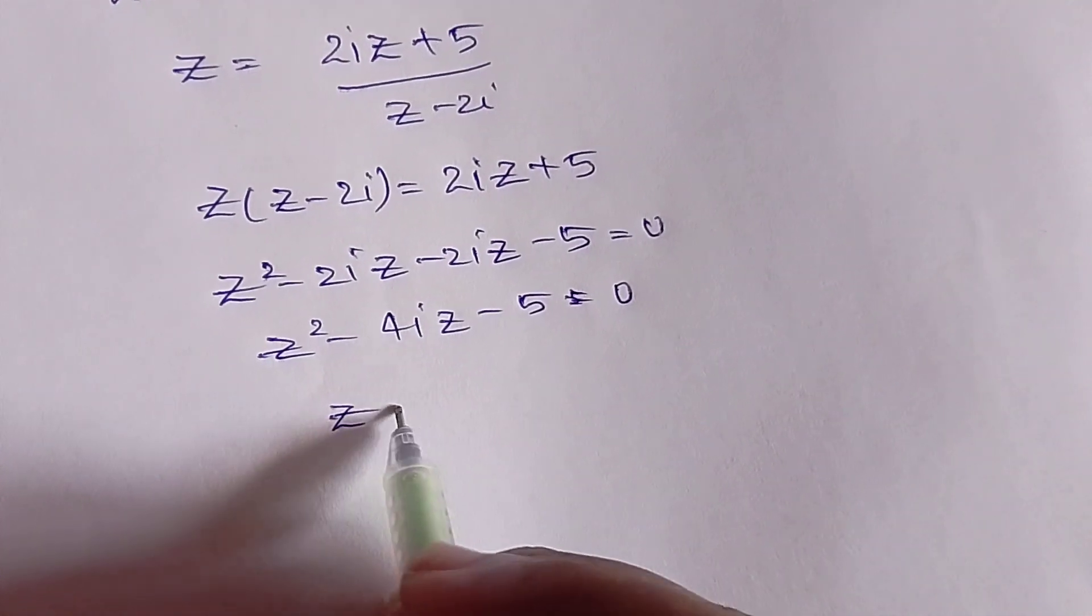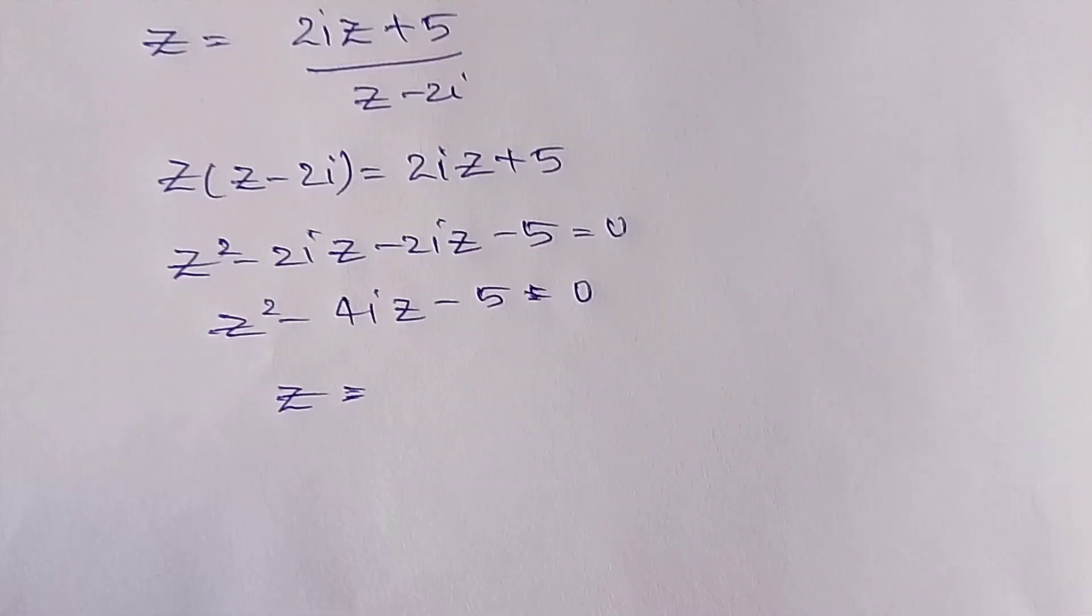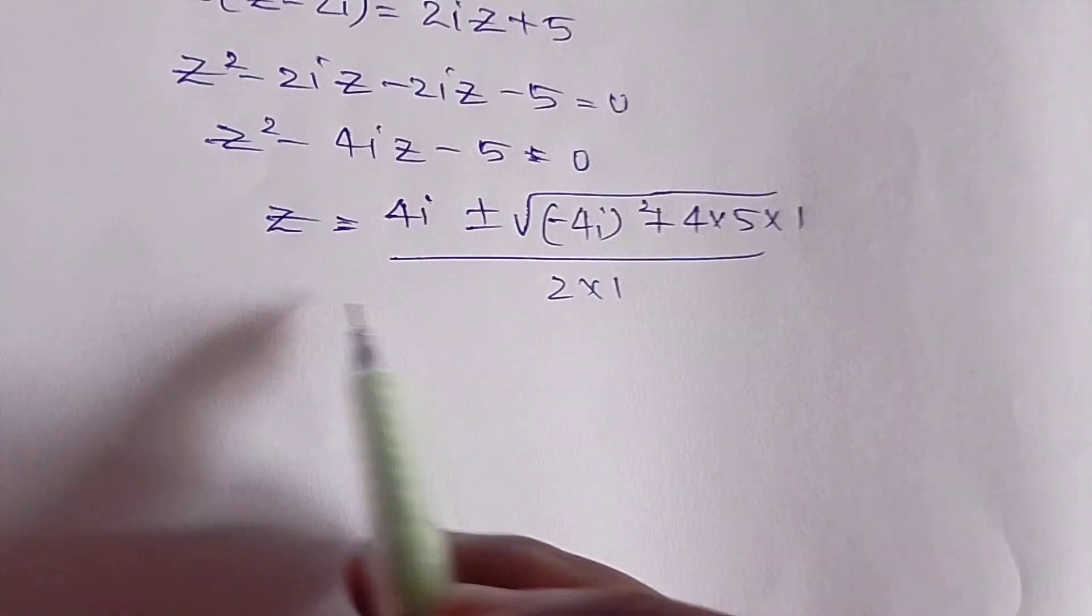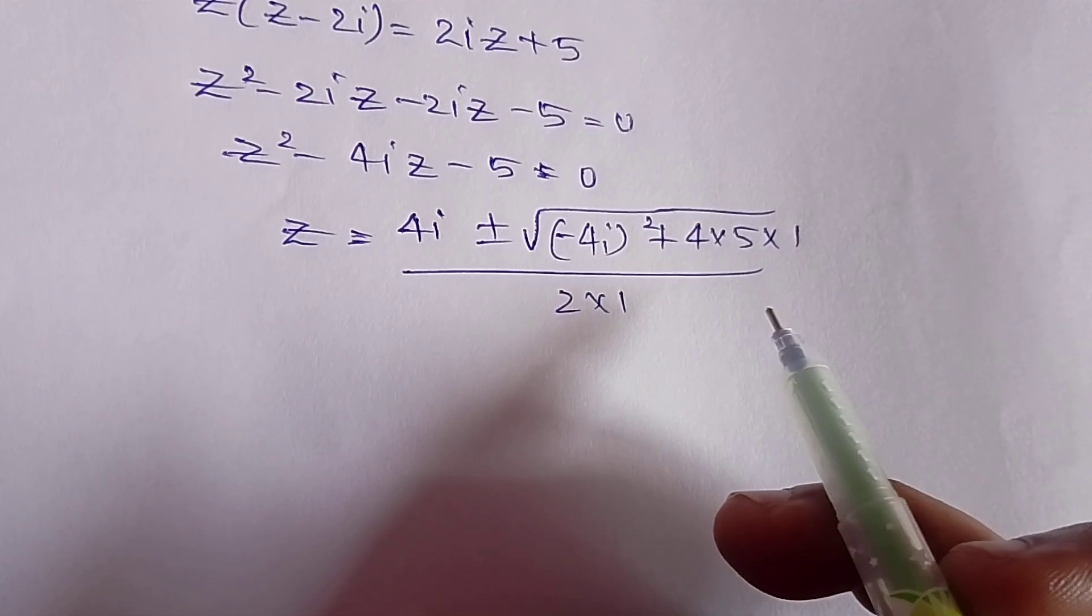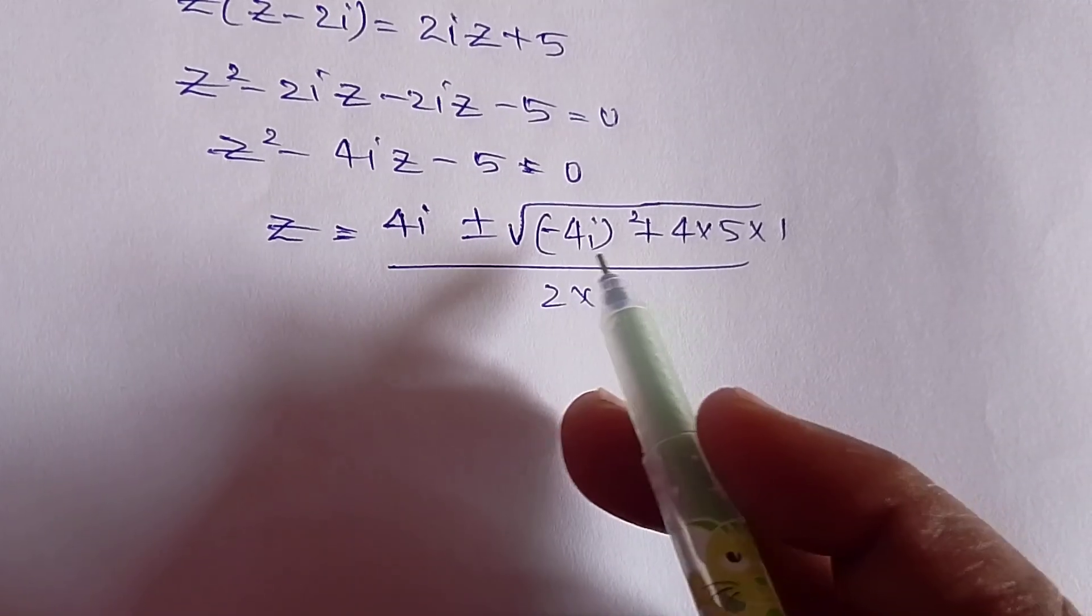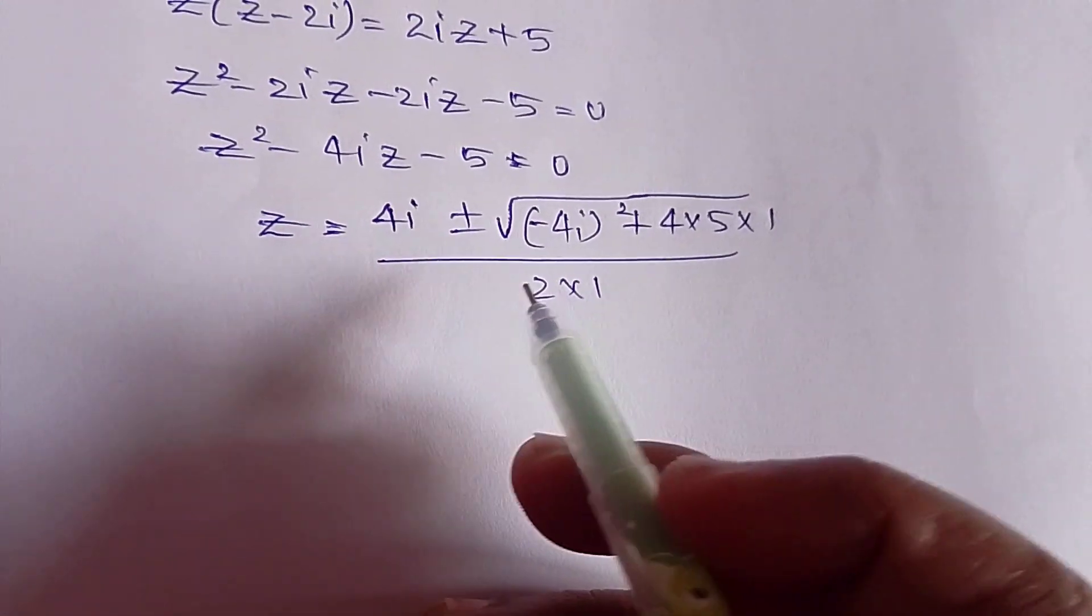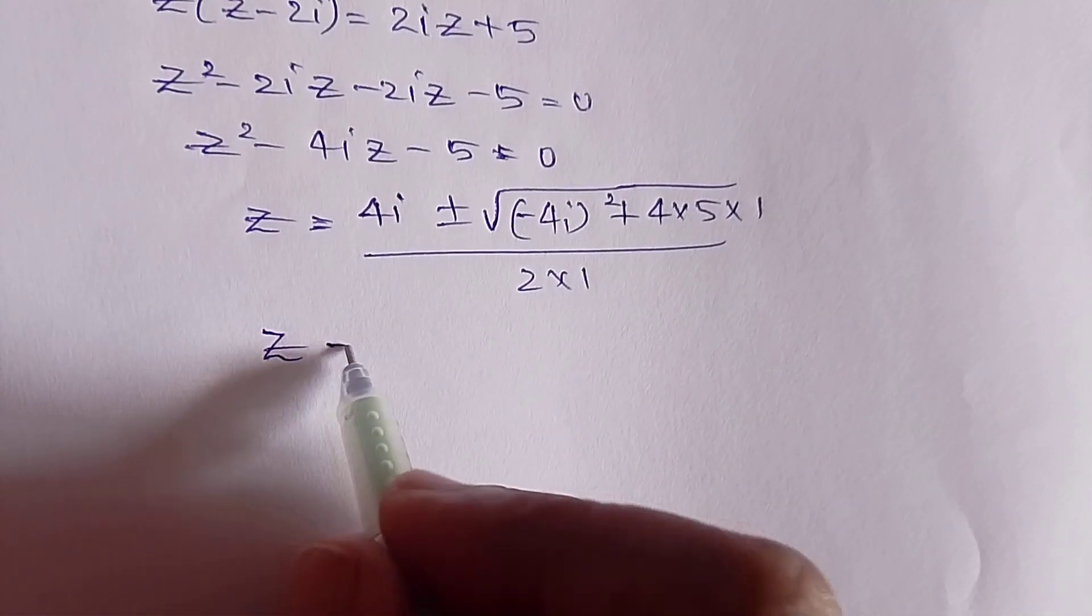Then, when you simplify using the quadratic formula z = [-b ± √(b² - 4ac)]/(2a), this simplifies to: we know i² = -1, so z = [4i ± √(16i² + 20)]/(2) = [4i ± √(-16 + 20)]/(2) = [4i ± 2]/(2).